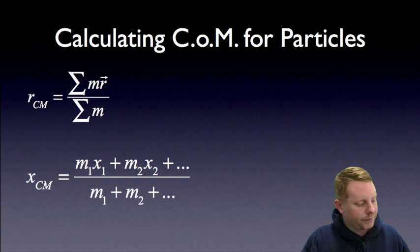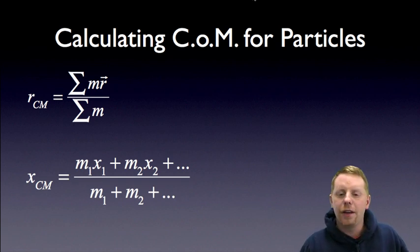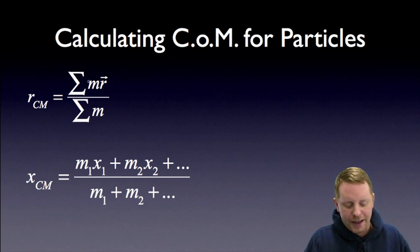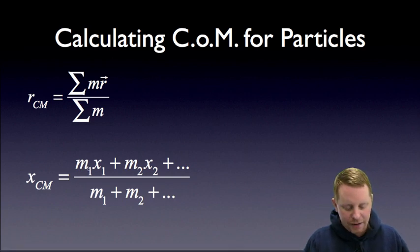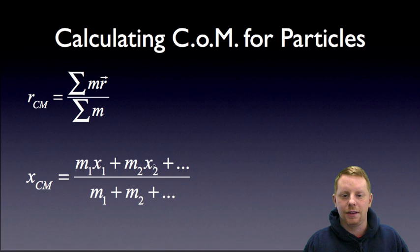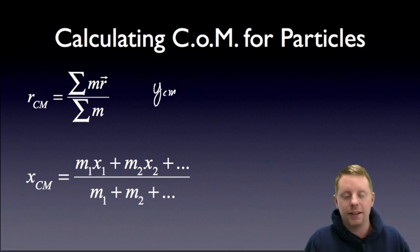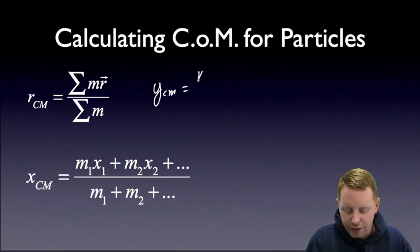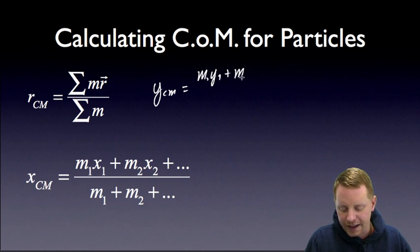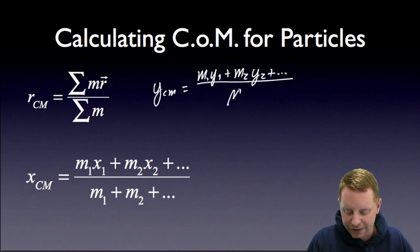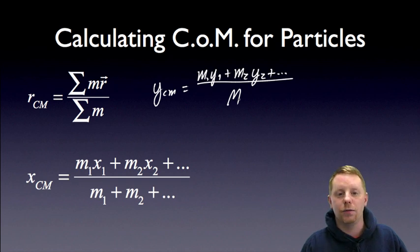For something slightly more complex, we can calculate the center of mass for a system of particles. The position vector for the center of mass equals the sum of each mass times its position, divided by the total mass. So the x-coordinate of the center of mass is: mass one times its x-position, plus mass two times its x-position, plus however many more you have, all divided by the total mass. In the same fashion, the y-coordinate of the center of mass is: mass one times its y-coordinate, plus mass two times its y-coordinate, and so on, divided by the total mass, capital M.